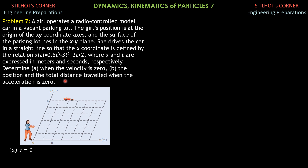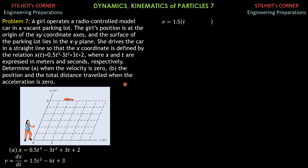So x equals 0.5t³ minus 3t² plus 3t plus 2. The derivative of x with respect to time is velocity: v = dx/dt = 1.5t² minus 6t plus 3. Before we equate this to 0, we factor out 1.5 to get: v = 1.5(t² minus 4t plus 2), and we equate it to 0.